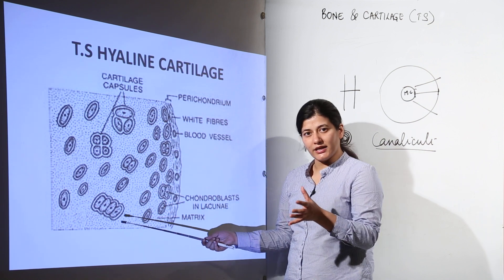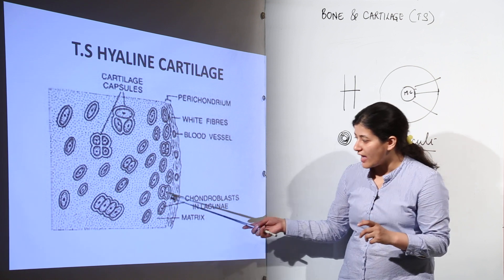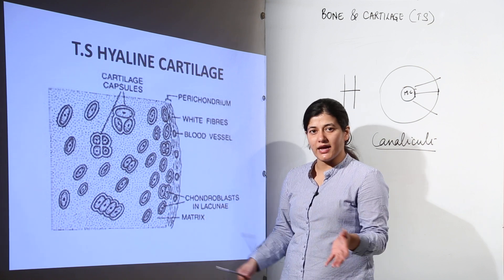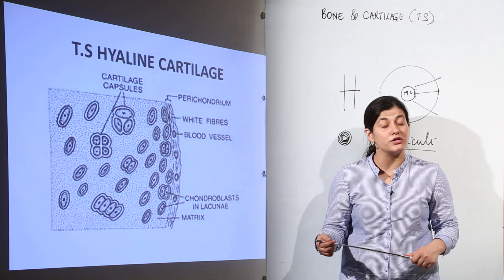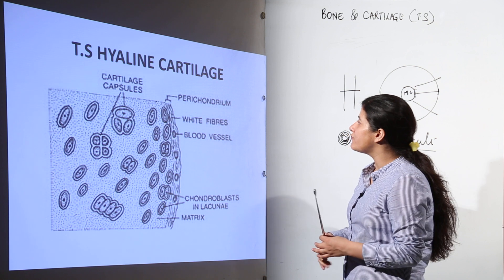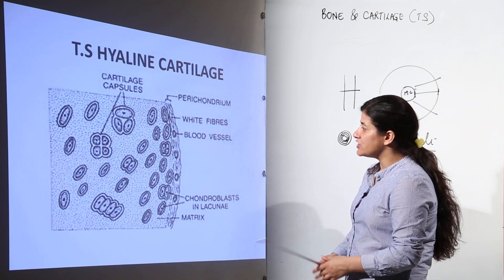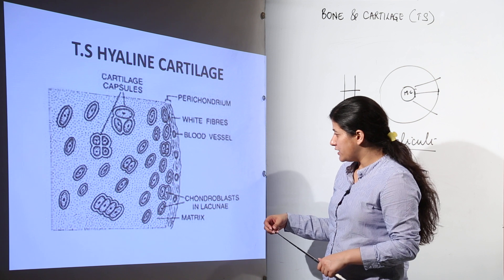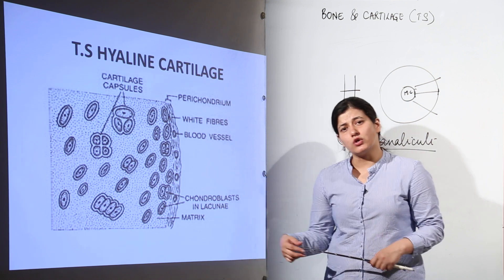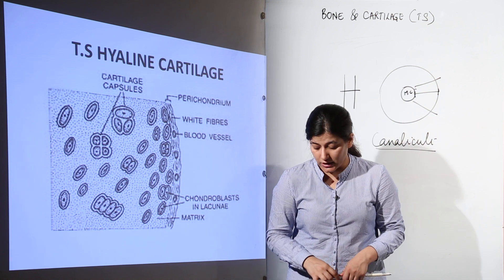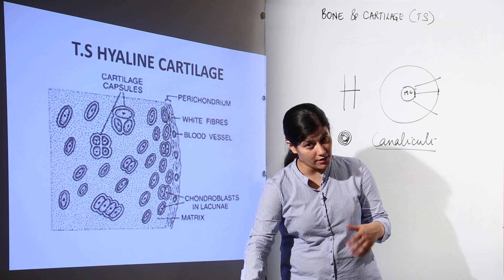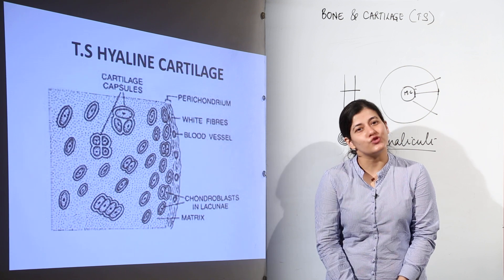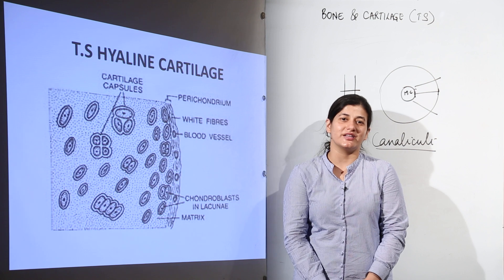The matrix of cartilage is rich in chondrin. As with all connective tissues, cartilage has a matrix and cellular components — chondroblasts are present inside lacunae. There is also a blood supply along with white collagen fibers (not elastin, which are yellow fibers). In the transverse section, the lacunae are also called capsules, inside which we have chondrocytes or chondroblasts that secrete chondrin to form the pliable cartilage. This cartilage is found in the nose, ears, and at the ends of bones for articulation in joints.